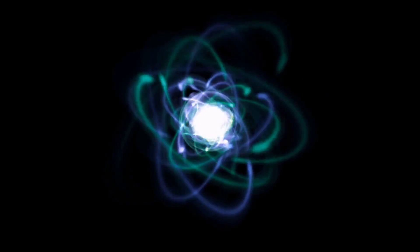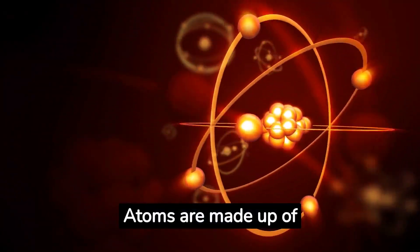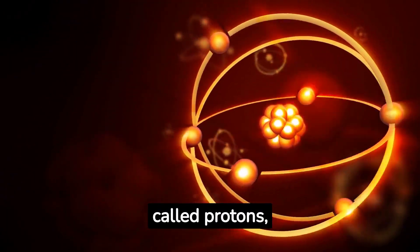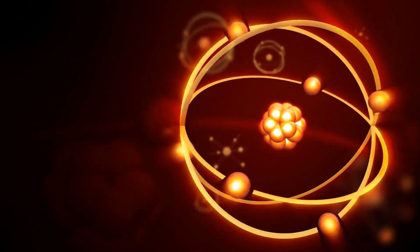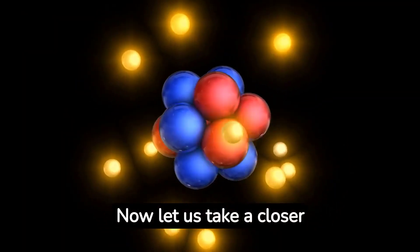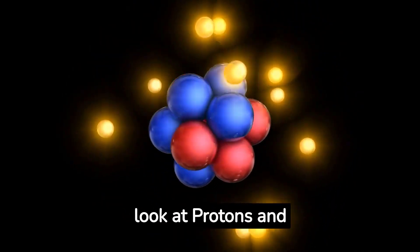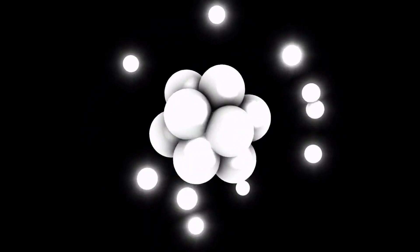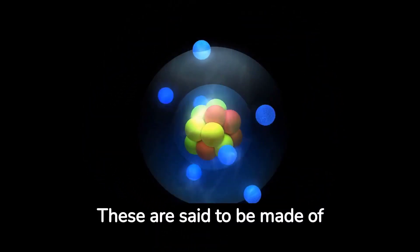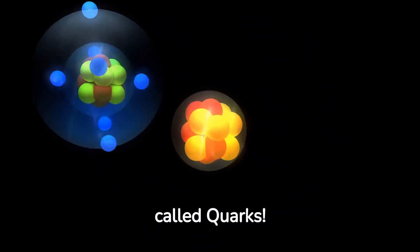But it doesn't stop there. Atoms are made up of subatomic particles called protons, neutrons and electrons. Now let us take a closer look at protons and neutrons. What are these subatomic particles themselves made of? These are said to be made of elementary particles called quarks.